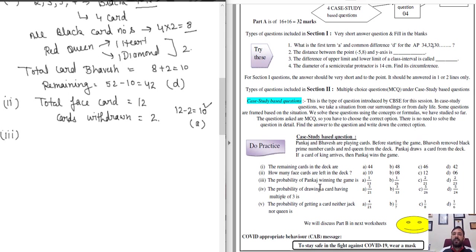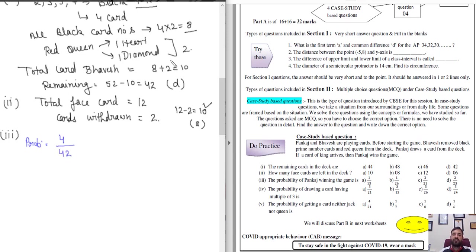Case Study Q3: What is the probability of Punkas winning the game? Punkas wins only when a king is drawn. There are 4 kings in a deck, and 42 cards remain. So the probability = 4/42 = 2/21. The correct answer is C.